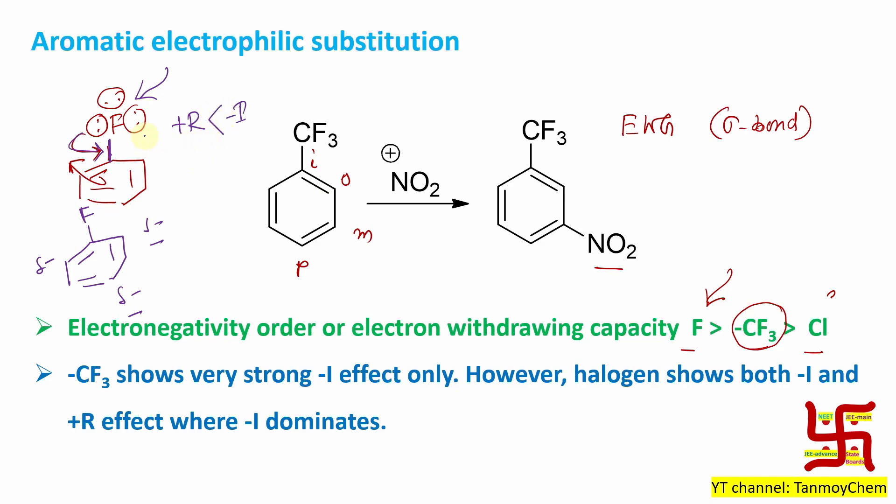And in this case, minus I effect is dominated over the plus R effect. But since they are ortho-para orienting, if you do aromatic electrophilic substitution or nitration on fluorobenzene, you will get ortho and para substituted products. The same thing is true for chlorobenzene also.